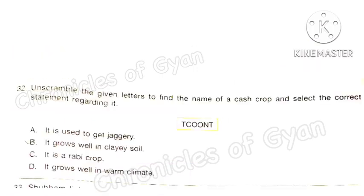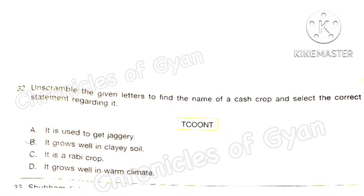Question 32: Unscramble the given letters to find the name of a cash crop and select the correct statement regarding it. The cash crop is cotton. Option A — it is used to get jaggery — is incorrect. Option B — it grows well in clay soil — is correct. Option C — it is a rabi crop — is incorrect, as cotton is a kharif crop. Option D — it grows well in warm climate — is also incorrect. So the correct answer is option B: it grows well in clay soil.